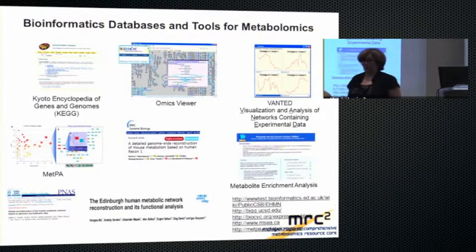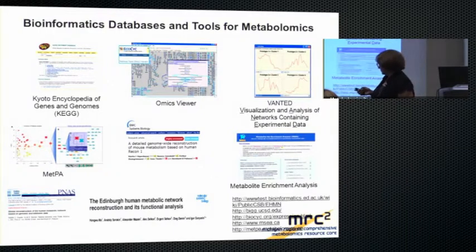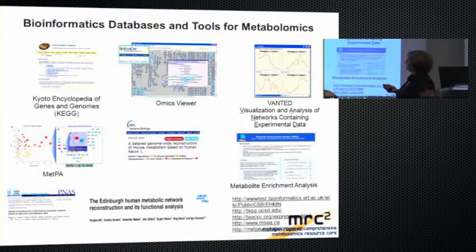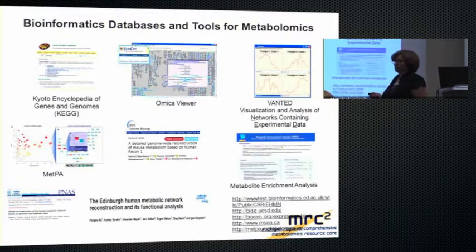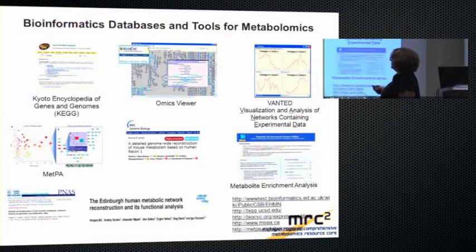For unbiased hypothesis-generating studies, manual pathway mapping really won't get you very far — unless you have several hard-working students or postdocs willing to work day and night, but even then it's not a productive approach. Recognizing this, a number of different tools were developed. One particular tool called OmicsViewer, from Peter Karp's group, has metabolic reconstructions for various organisms — primarily bacteria — and they're known originally for their EcoCyc database of metabolic pathways in E. coli.